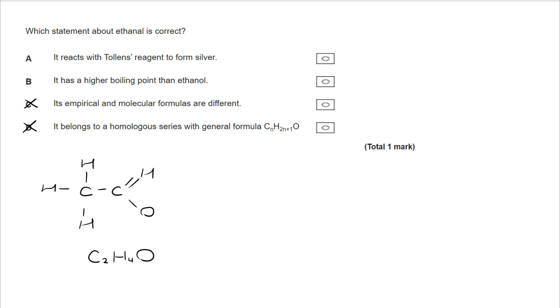If I move on to B, and look at the higher boiling point than ethanol, well absolutely not, because ethanol exhibits hydrogen bonding. An aldehyde will only show permanent dipole-dipole forces. Hydrogen bonding is stronger, so the boiling point is higher. You could have actually got straight to A, and hopefully remembered that in Tollens reagent, an aldehyde forms a silver mirror.